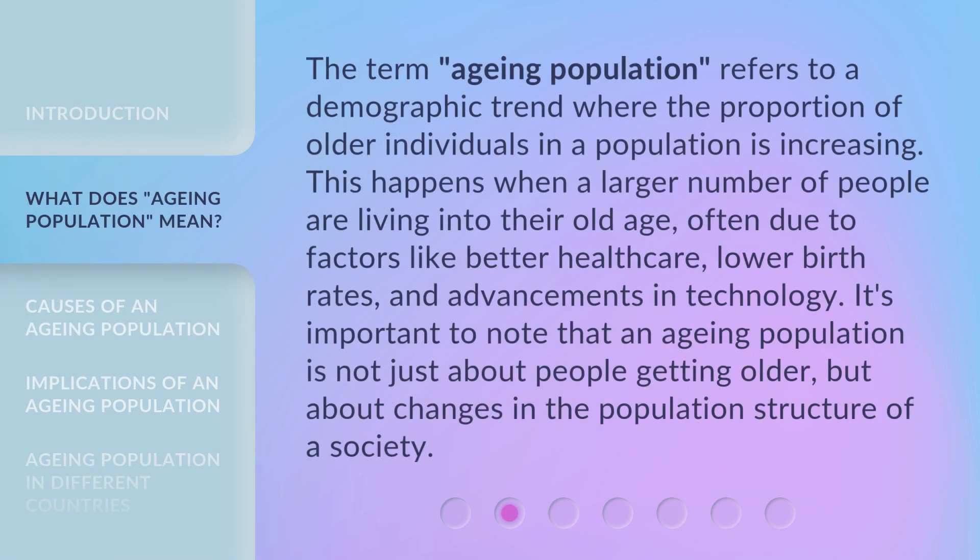The term 'aging population' refers to a demographic trend where the proportion of older individuals in a population is increasing. This happens when a larger number of people are living into their old age, often due to factors like better healthcare, lower birth rates, and advancements in technology. It's important to note that an aging population is not just about people getting older, but about changes in the population structure of a society.